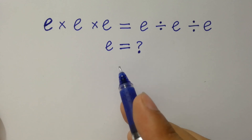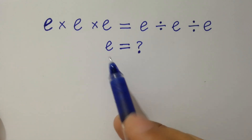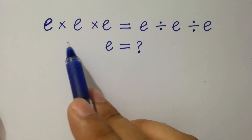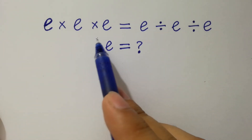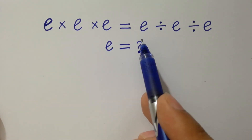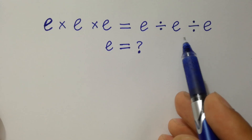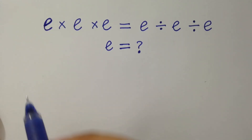Hello friends. Find the value of e if e times e times e equals e divided by e divided by e. Let's have a solution.